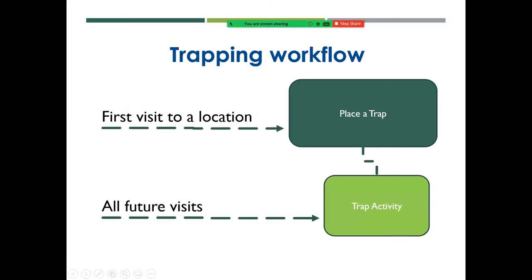Some terminology on trapping workflow: the first visit to a location we refer to as placing the trap. In placing the trap, you are also installing a trap — there is an install date field on the form and it physically places a trap symbol on the map. All future visits are considered a trap activity, and those are recorded on a related table within that first 'place a trap' form. The first visit places the trap, installs it based on your entry of the install date, and places a symbol on the map. Future visits are trap activities.